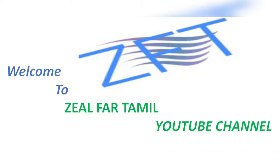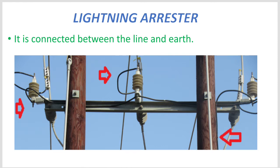What is the major role of a lighting arrester in transmission and distribution? The lighting arrester is used to divert abnormal high voltage to ground without affecting the continuity of supply. It is connected between the line and earth.